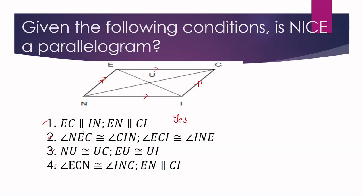Statement number two: angle NEC is congruent to angle CIN, and angle ECI is congruent to angle INE. Based on this statement, yes, NICE is a parallelogram, because the opposite angles are congruent. That is condition number two.